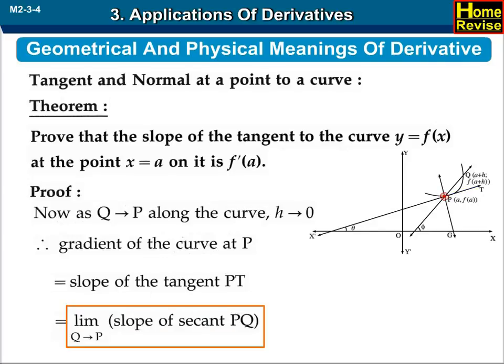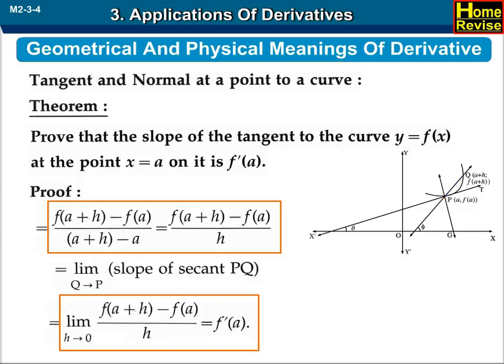Therefore, the gradient of the curve at P equals the slope of the tangent, which equals the limit as Q tends to P of the slope of secant PQ, which equals the limit as h tends to 0 of f(a plus h) minus f(a) upon h, and that equals f prime of a.